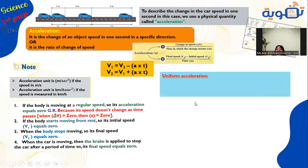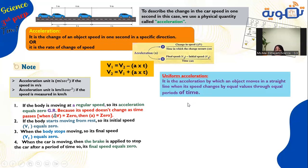Uniform acceleration is the acceleration by which an object moves in a straight line when its speed changes by equal values through equal periods of time — the change in speed is constant, not the speed itself. For example, speeds of 10, 20, 30, 40 m/s: the value of change is constant at plus 10 each interval.